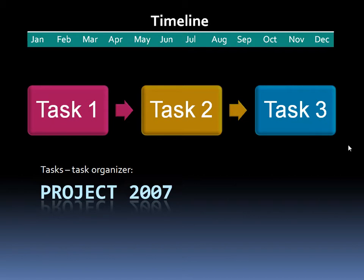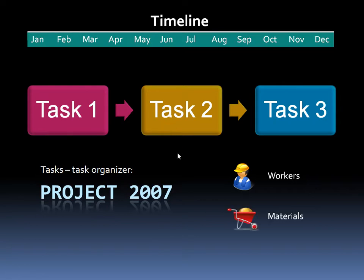Each task is going to require some resources, and there are three types of resources. You have your workers, which is who's going to work on task 1, task 2 — for example, task 2, writing the book, you could have writers. The next resource would be materials: do they need paper to write the book, or are they going to use a word processing program like Word 2007? And finally you have the cost: are you going to pay your workers hourly or salary, and of course the cost of the materials.